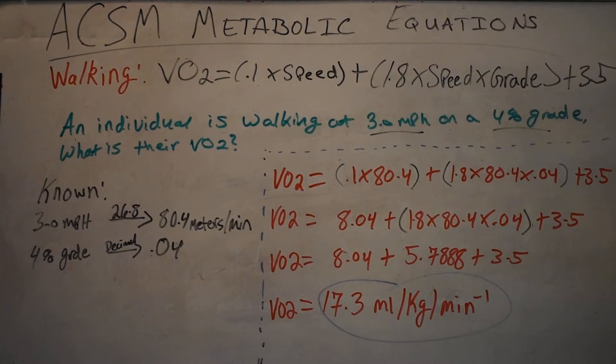The reason why I like to do this step first is because remember I said there's a caveat in the equation. Your speed must be in meters per minute. So if we write down our known factors, 3.0 miles per hour, we have to convert that into meters per minute.